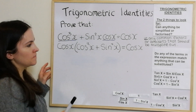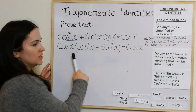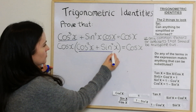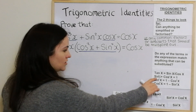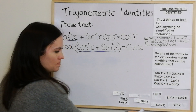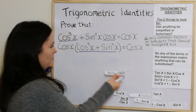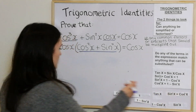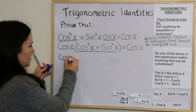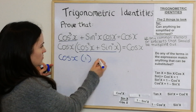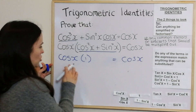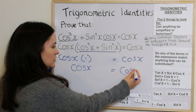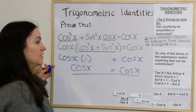Now, do any of the terms in the expression match anything that can be substituted? I'm looking at cos²x + sin²x inside the bracket. Since sin²x + cos²x = 1, it doesn't matter which way round we have them — this part equals 1. So we get cos x · 1 = cos x, which gives cos x = cos x. That finishes that one.